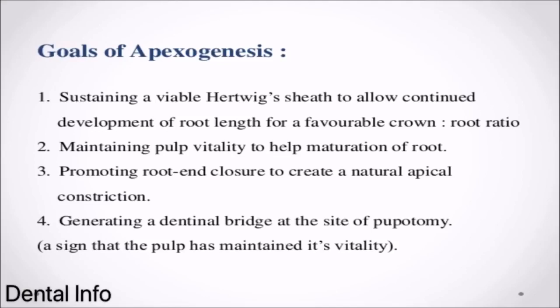Goals of Apexogenesis: 1. Sustaining a viable Hertwig's sheath to allow continued development of root length for a favorable crown-to-root ratio. 2. Maintaining pulp vitality to help maturation of the root. 3. Promoting root end closure to create a natural apical constriction. 4. Generating a dentinal bridge at the site of pulpotomy — a sign that the pulp has maintained its vitality.